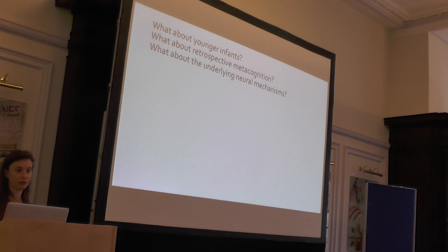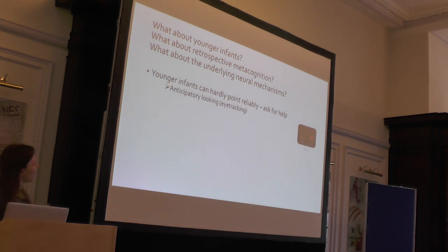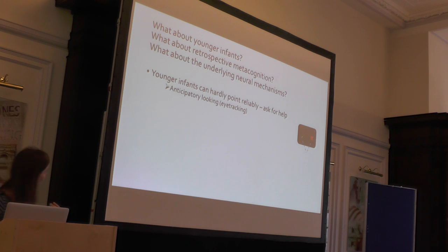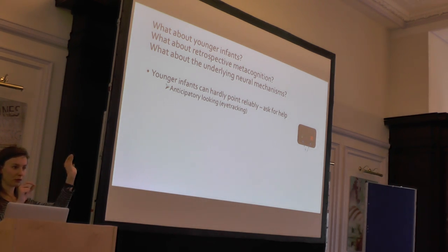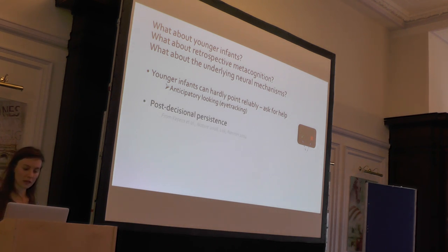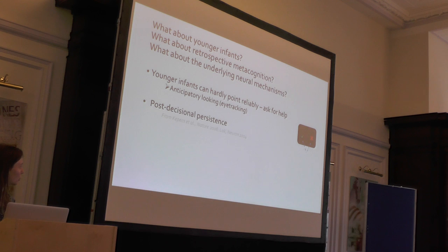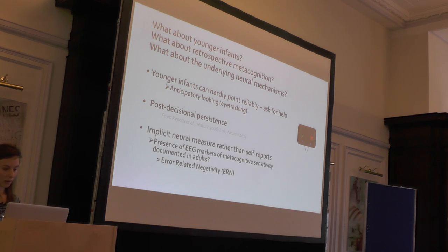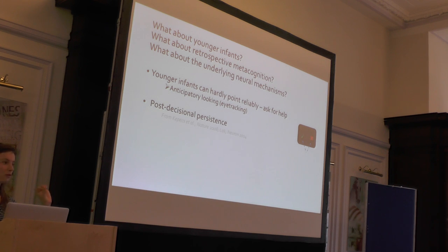To conclude on this first study: infants allowed to ask for help used this option strategically to improve their performances - selectively avoiding making errors and preferentially declining difficult choices. This suggests they monitor their own uncertainty and share this information with others in order to achieve their goals. We then wondered about younger infants - 12-month-olds - who can hardly point reliably in this kind of paradigm. So we used instead anticipatory looking in an eye-tracking study, wanting to measure retrospective metacognition - whether infants could monitor the accuracy of a decision they had just made.